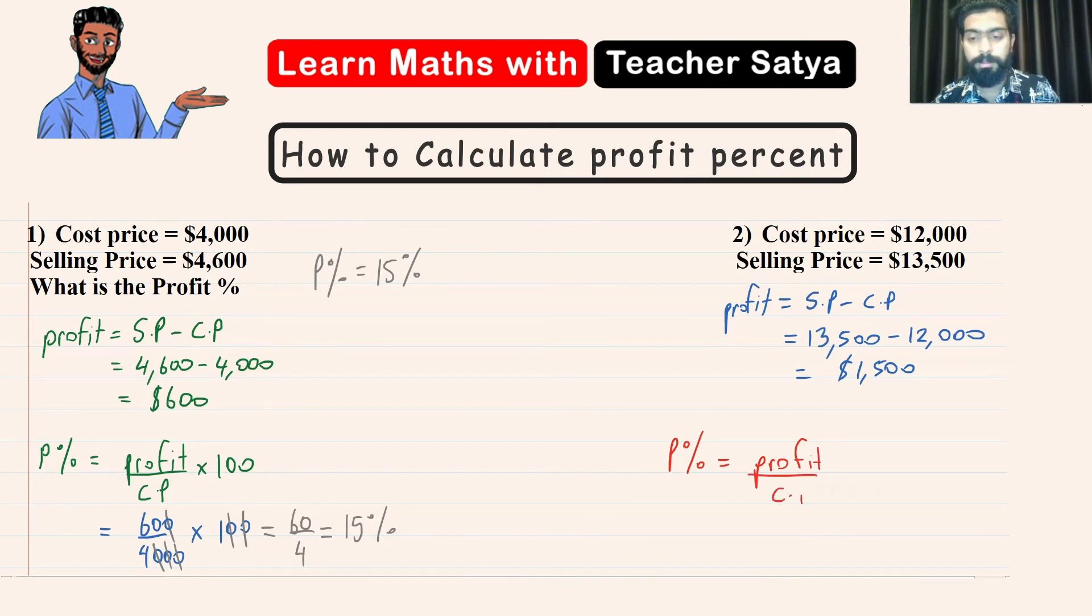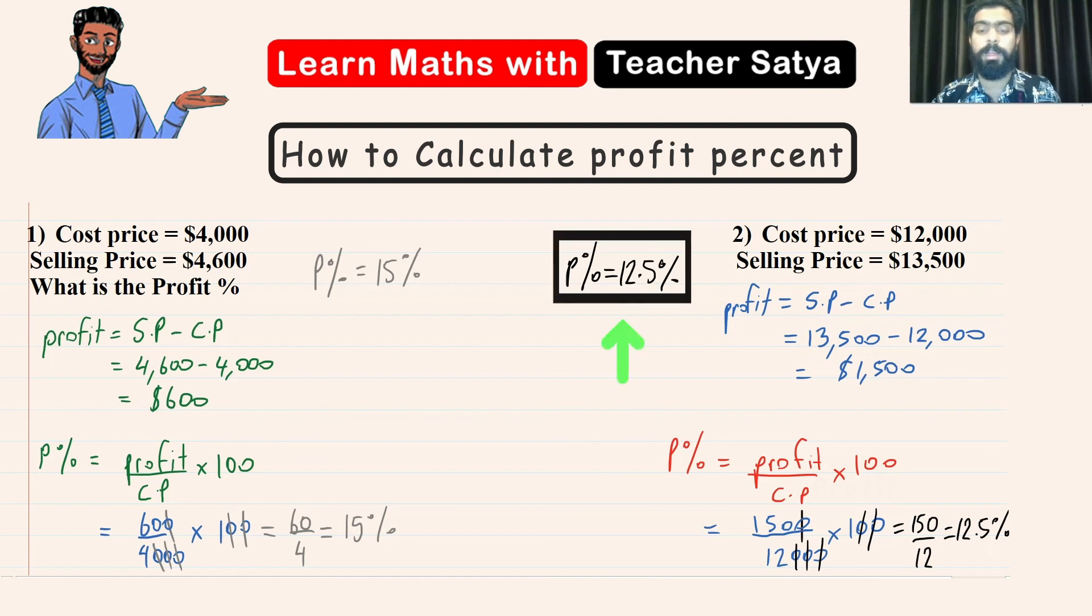So what we have here the profit is equal to 1,500 over the CP in this question which is 12,000 and we are going to take this and multiply by 100. Now again guys we are going to simplify some zeros here. So we are straight away going to simplify these two zeros and I am going to simplify this zero with this zero. So what I have left is equal to 150 over 12 which is equal to 12.5 percent. So in this case the profit percent for question number 2 would be equal to 12.5 percent.